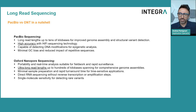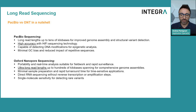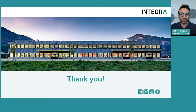To summarize, let's review the main advantages that distinguish each of the two technologies. PacBio sequencing provides long read lengths up to tens of kilobases, aiding in genome assembly and structural variant detection, high accuracy with HiFi sequencing, capability to detect DNA modifications for epigenetic analysis, and minimal GC bias with reduced impact over repetitive sequences. Oxford Nanopore sequencing offers portability and real-time analysis for fieldwork and rapid surveillance, ultra-long read lengths up to hundreds of kilobases enabling comprehensive genome assemblies, minimal sample preparation and quick turnaround time for sensitive applications, and is the only technology that enables direct RNA sequencing without reverse transcription or amplification. Thank you very much for watching. If you have any questions, please feel free to contact us anytime.